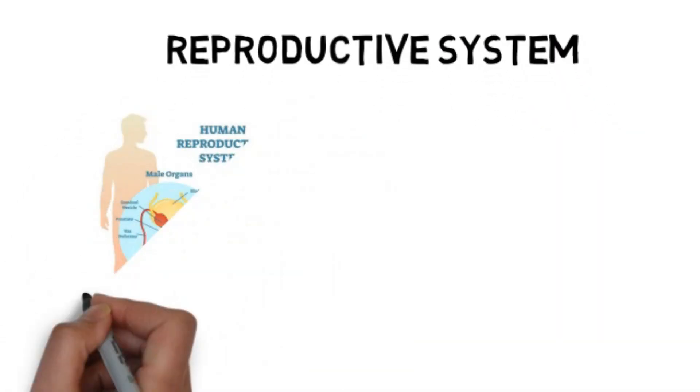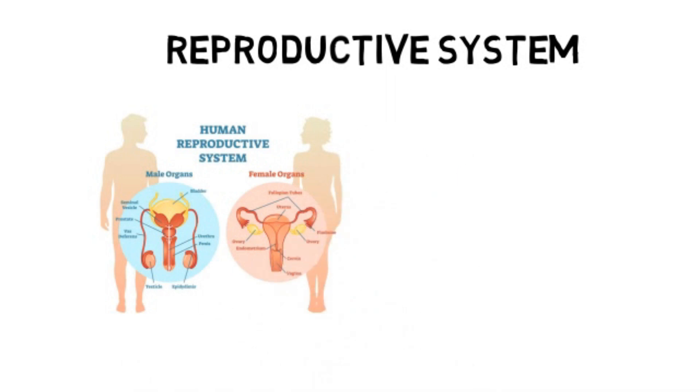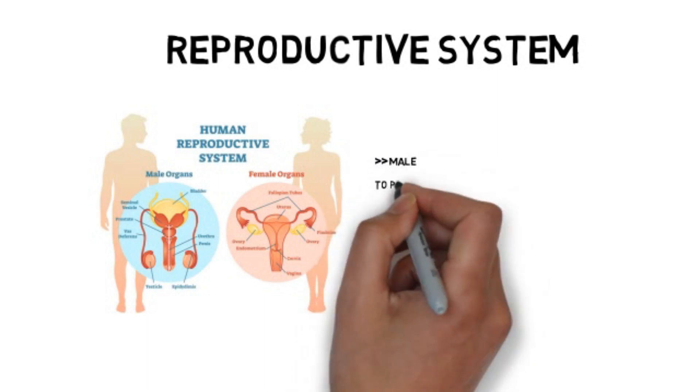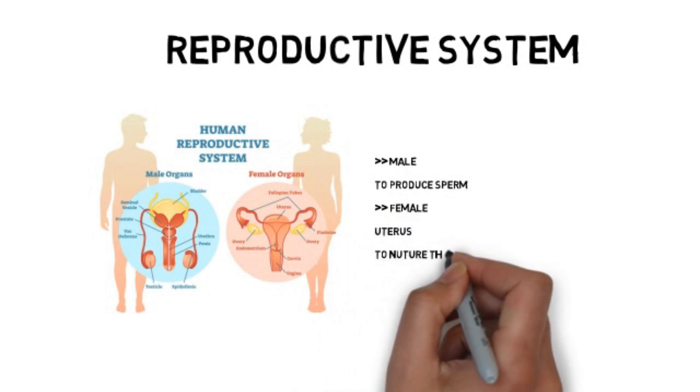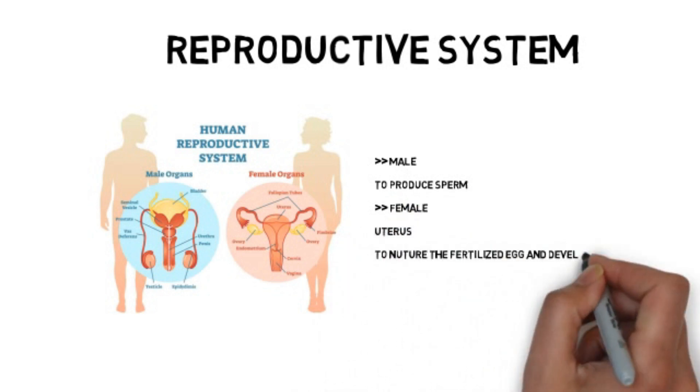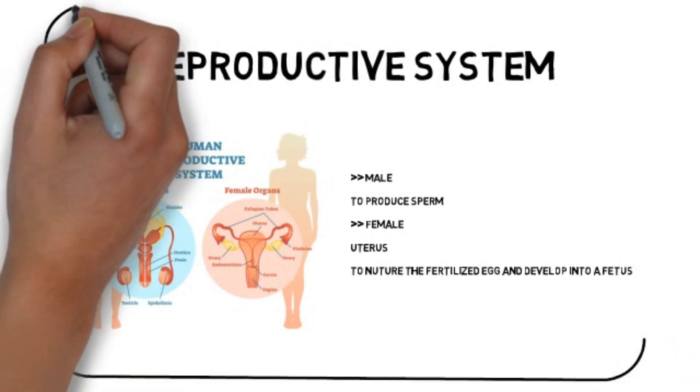Let's have a look at this picture of the human reproductive system. For the male organ, it is to produce the sperm, while the female has a uterus that is to nurture the fertilized egg and develop it into a fetus.